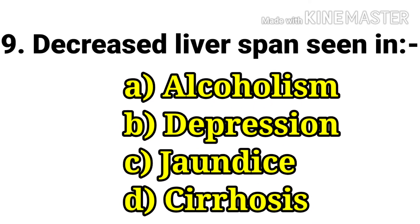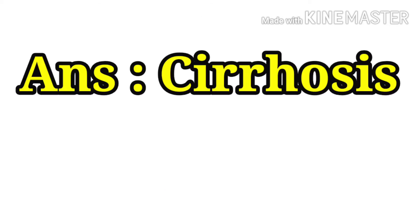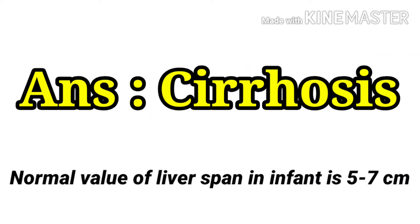The next question: decreased liver span is seen in — options are alcoholism, depression, jaundice, and cirrhosis. The answer is cirrhosis. The normal value of liver span in an infant is 5 to 7 cm.